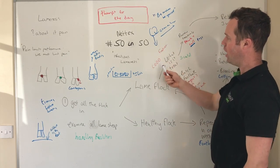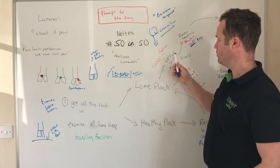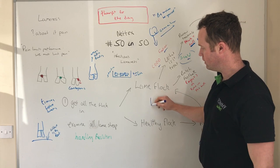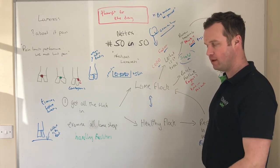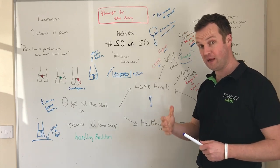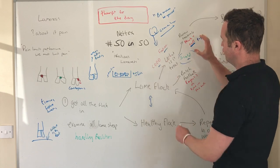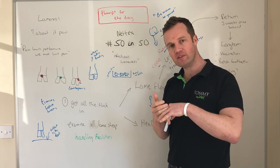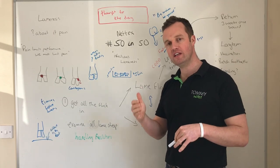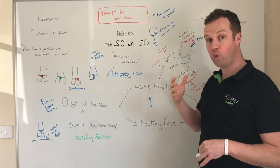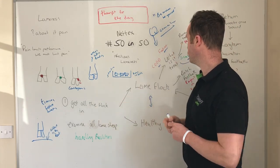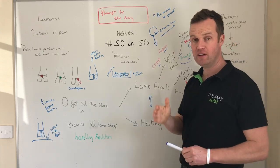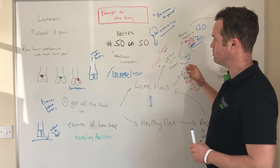With your lame flock, review how treatments are working — treatment success is really important. Sheep don't develop strong immunity to many of these bacteria, and animals can become chronic carriers. If you're treating an animal more than twice, that animal is going to be a reservoir for infection. Culling becomes an important part of the plan. I've seen color tags used: one color for first lameness, another for second, and after that it's goodbye — they're a source of infection.